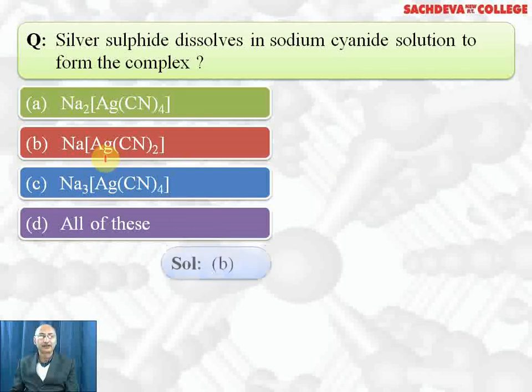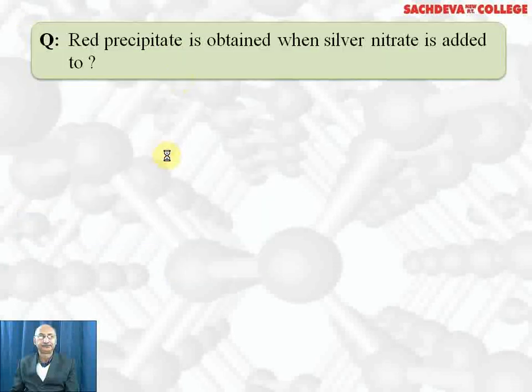Common name is sodium argentocyanide. To this complex when we add zinc, we get a complex of zinc Na2Zn(CN)4 plus silver metal is obtained.